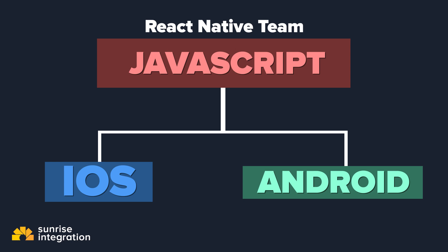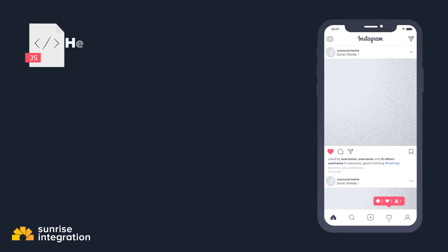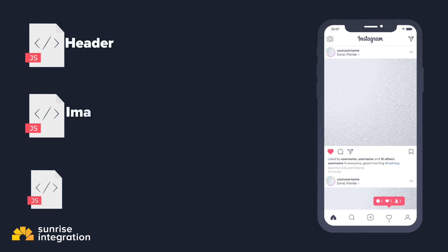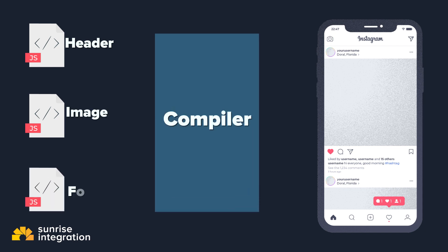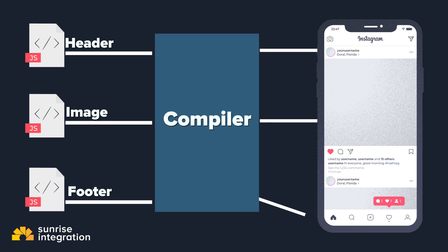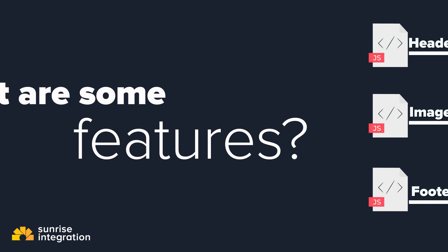React Native uses JavaScript code to actually build real native components, meaning that when the code is compiled it is all in native iOS and Android — not JavaScript code being rendered on an HTML page.